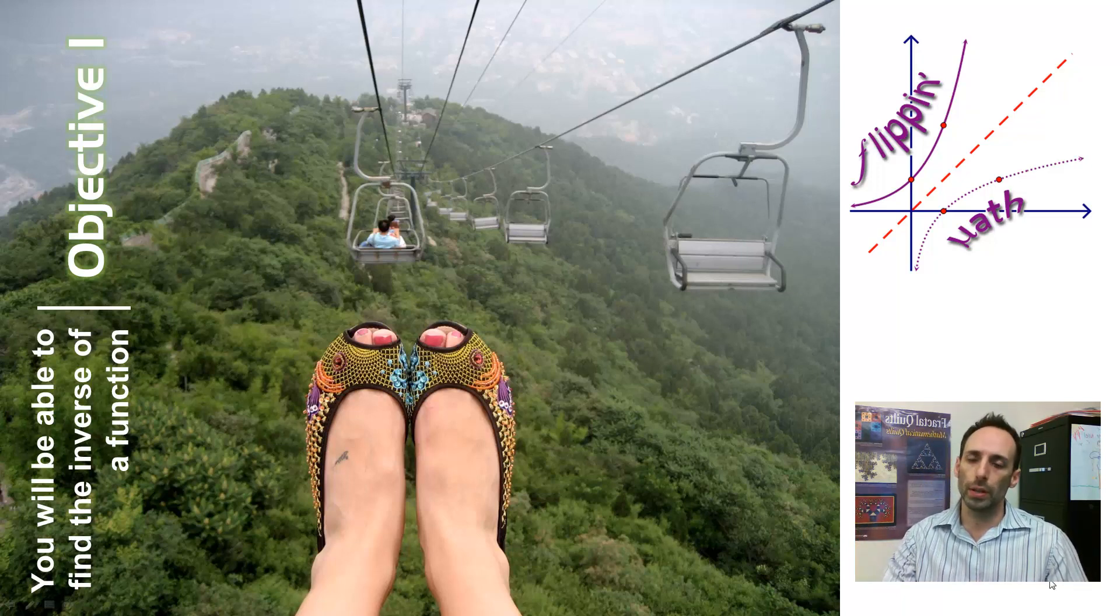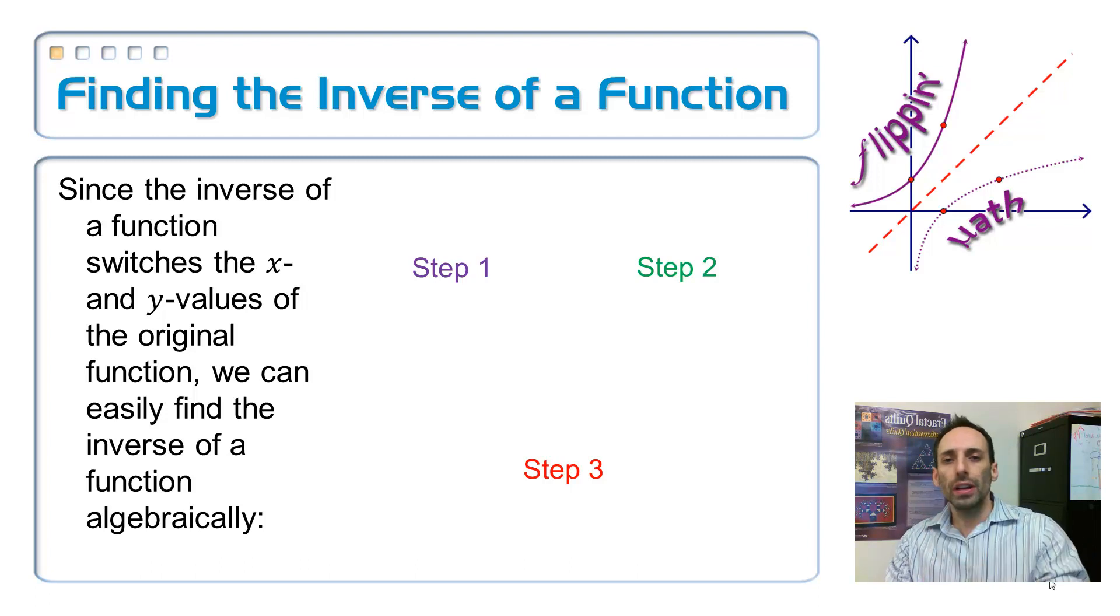So here we're actually going to find the equation for the inverse, and it's pretty simple. Since what an inverse of a function does is switch the inputs and the outputs, the x and the y, that's pretty much what you have to do. But usually your function has an f of x in it.